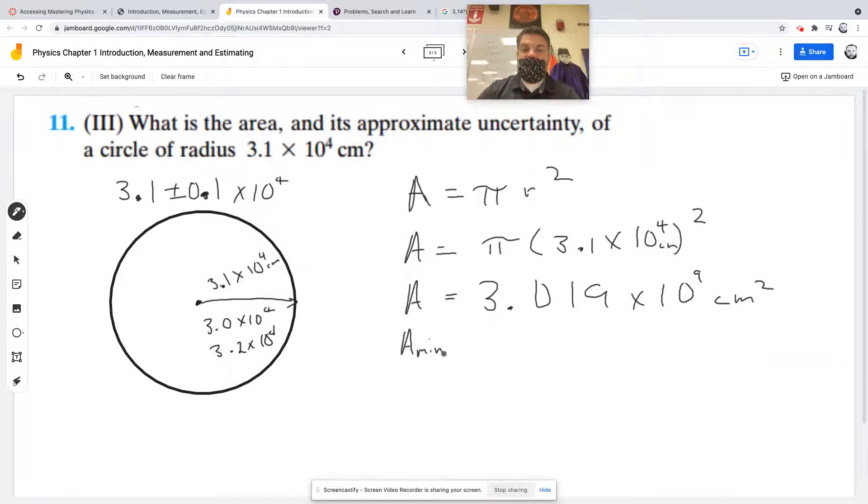The lower boundary is π times (3.0 times 10 to the 4th) squared. Plugging into a calculator gives 2.827 times 10 to the 9th centimeters squared. That's the minimum area based on the smallest possible radius.